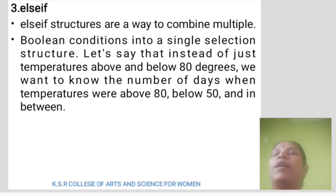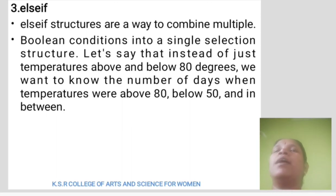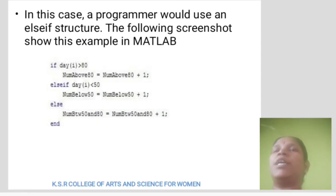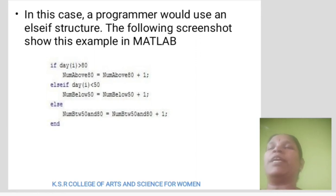Third, else-if condition. Else-if structure is a way to combine multiple Boolean conditions into a single selection structure. For example, instead of just knowing if temperature is above and below 80 degrees, we want to know the number of days when the temperature was above 80, below 50, and in between. In this case, a program would use an else-if structure. The following screenshot shows an example in MATLAB.